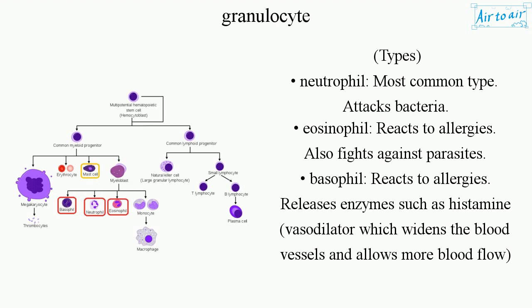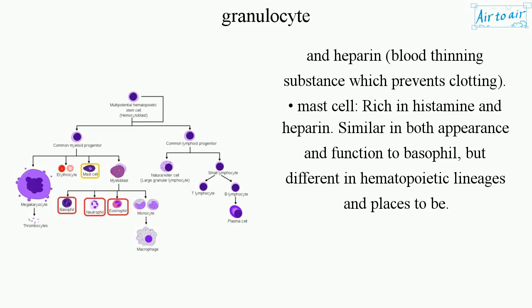Basophil releases enzymes such as histamine, a vasodilator which widens the blood vessels and allows more blood flow, and heparin, a blood-thinning substance which prevents clotting.